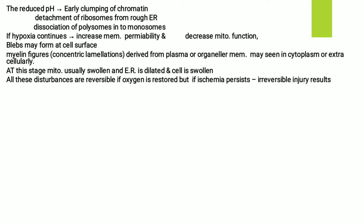If hypoxia continues, there is increased membrane permeability and decreased mitochondrial function. Blebs may form at the cell surface. Myelin figures — concentric laminations derived from plasma or organelle membranes — may be seen in cytoplasm or extracellularly. At this stage, mitochondria are usually swollen and endoplasmic reticulum is dilated; the cell is swollen. These disturbances are reversible if oxygen is restored. But if ischemia persists and recovery does not occur, irreversible injury results — the point of no return.